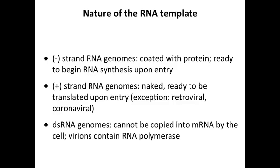Plus-strand genomes are typically naked in the virion. Poliovirus, for example, has a plus-stranded genome, and the first thing that happens is it gets translated — it doesn't need to bring anything in with it. There are two exceptions: retrovirus genomes are complexed with proteins because the RNA genome gets copied back to DNA, and the cell can't do that, so the enzyme must be brought in with the particle. Coronaviruses are also unusual — they are plus-stranded RNA genomes but come into the cell complexed with proteins. Coronaviruses have really long RNA, so maybe that has something to do with it.